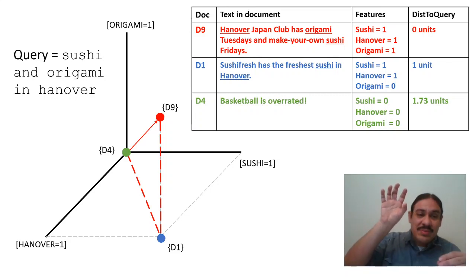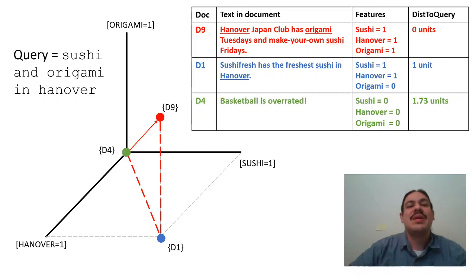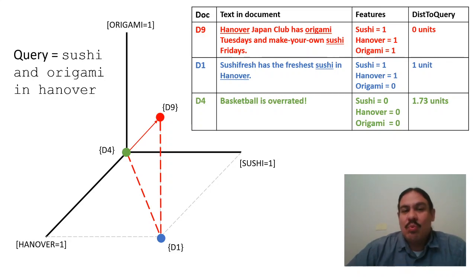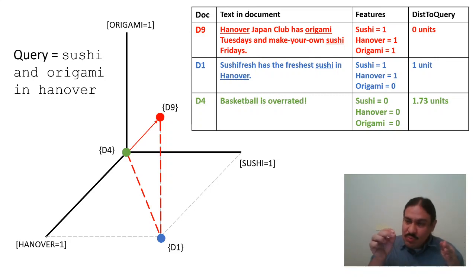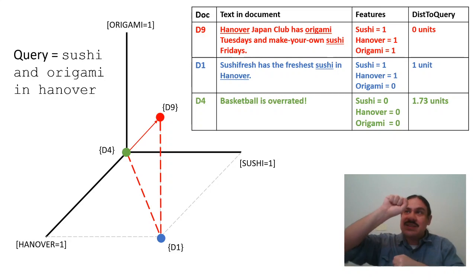Starting from the center, the dot representing D9 is floating above our plane. We can also have a document like D1 — 'Sushi Fresh has the freshest sushi in Hanover' — whose description is 1,1,0: one step in the sushi dimension, one step in the Hanover direction, and zero steps in the origami dimension. Notice that the distance between D9 and D1 is one unit, precisely that origami jump.